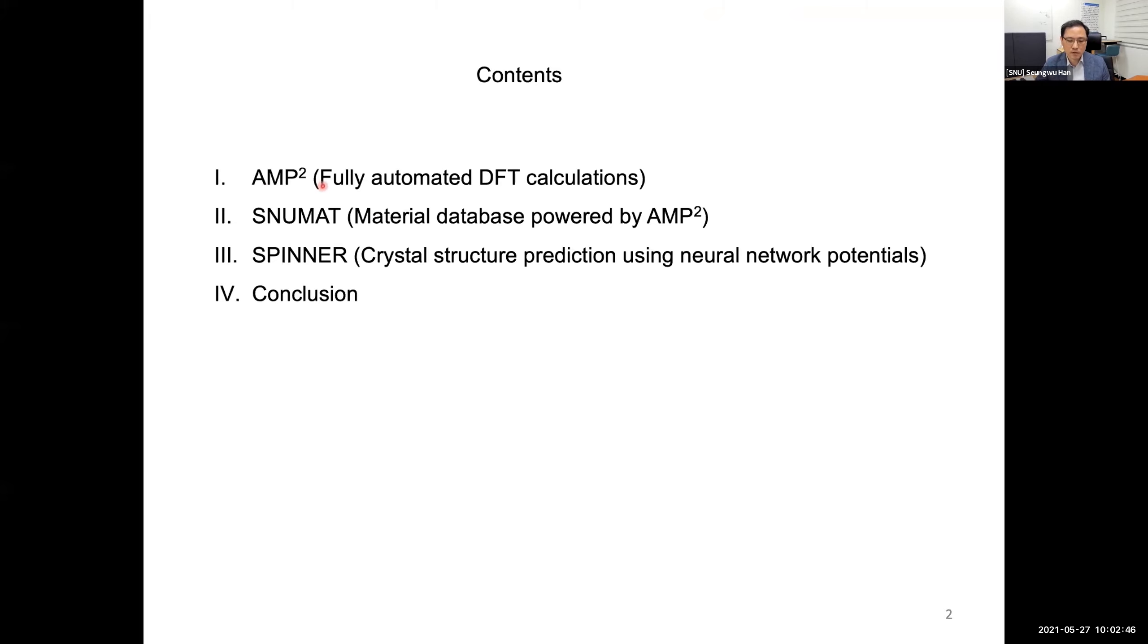The first, AMP-Square for fully automated DFT calculations, and the second, Sunumet, a material database powered by AMP-Square and the Spinner that we are recently developing for crystal structure prediction using neural network potentials. I would say that this is the present and this is the future.